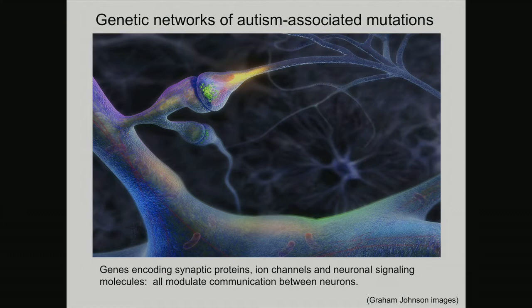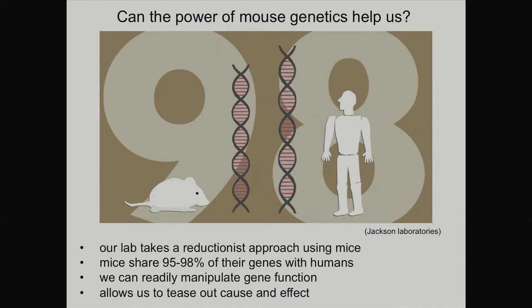Synapses are very complicated, and there are so many different types of cells and synapses. To help simplify things, our lab takes a more reductionist approach and works in mice. Mice are a great genetic tool — they share somewhere between 95 to 98% of their gene-coding sequences with humans, so they're highly homologous. We can very readily manipulate gene function, and the tools have become remarkably easy to use over the past 20-plus years.